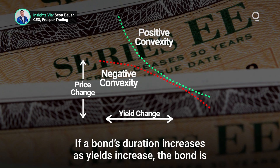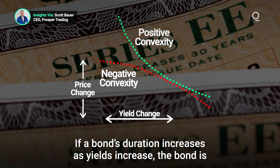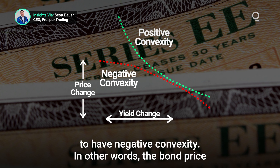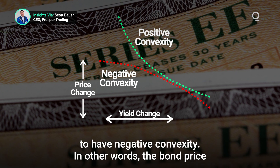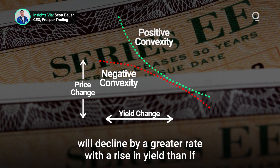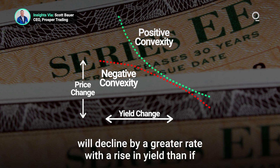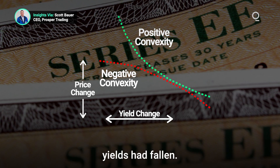If a bond's duration increases as yields increase, the bond is said to have negative convexity. In other words, the bond price will decline by a greater rate with the rise in yields than if yields had fallen.